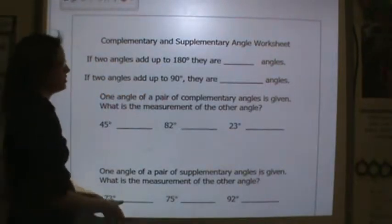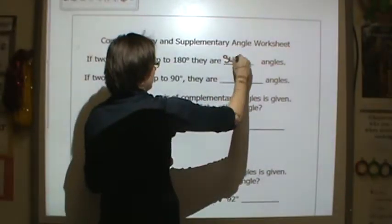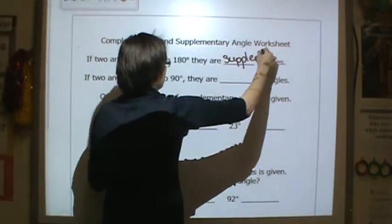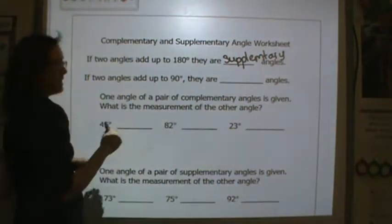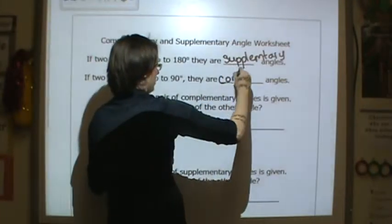So if two angles add up to 180 degrees they are supplementary angles. If two angles add up to 90 degrees they are complementary angles.